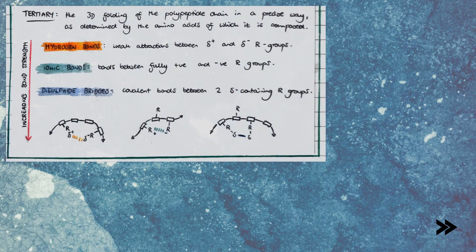Next, we have the tertiary structure, which is the 3D folding of the polypeptide chain in a precise way, as determined by the amino acids of which it is composed. Three different types of bonds determine the tertiary structure: hydrogen bonds, which are weak attractions between delta-positive and delta-negative R groups; ionic bonds, which are bonds between fully positive and fully negative R groups; and disulfide bridges, which are covalent bonds between two sulfur-containing R groups. As represented by an arrow, the bonds have increasing strength — so disulfide bridges are the strongest types of bonds which determine the tertiary structure of proteins.